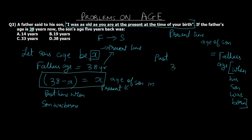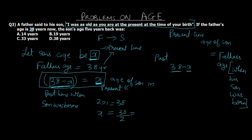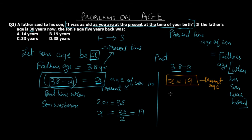So when the son was born, father's age was 38 minus x, because we subtract the son's current age x from the father's present age to get the father's past age. This equals the son's current age x, giving us the equation 38 minus x equals x. Solving: 2x equals 38, so x equals 19. That is the son's present age. But the question asks for the son's age 5 years back, which is 19 minus 5 equals 14 years. Option A is the final answer.